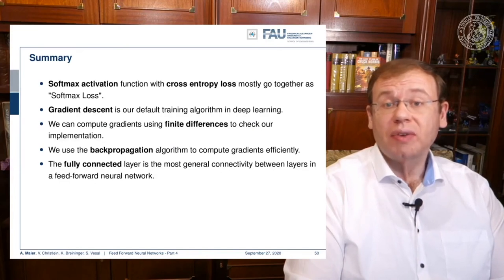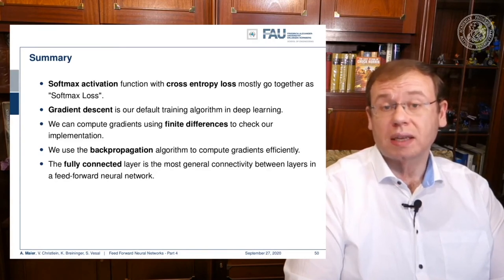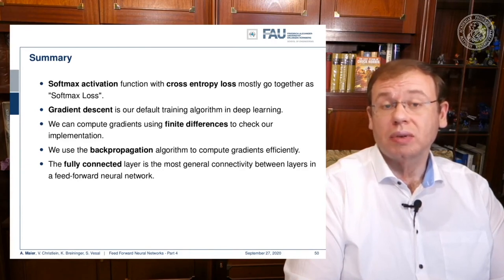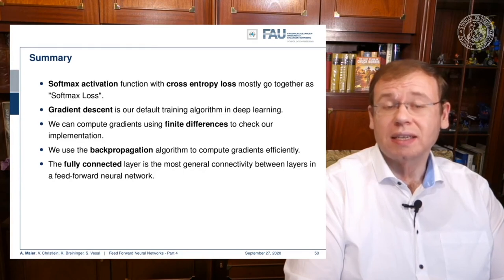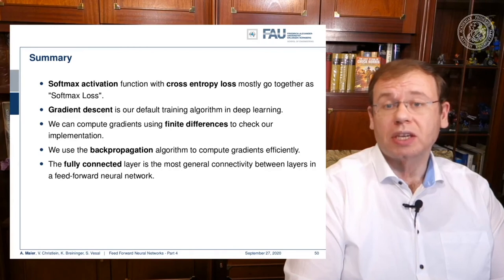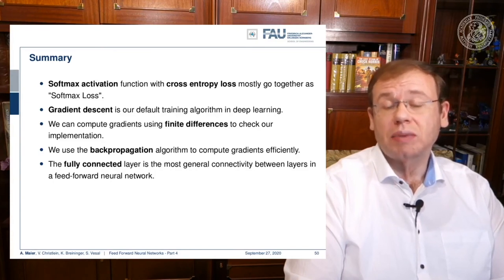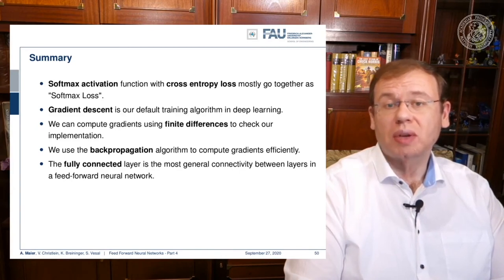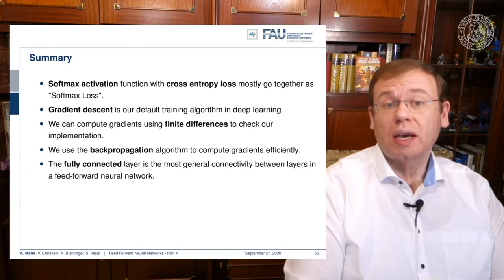To summarize: we've seen that combining softmax activation with cross-entropy loss allows us to naturally work with multi-class problems. We use gradient descent as the default training strategy, and gradients can be checked numerically using finite differences — very useful for verifying implementations. The backpropagation algorithm computes gradients efficiently. Fully connected layers can be abstracted as complete layers, so we compute layer-wise derivatives rather than going node by node. Matrix calculus turns out to be very useful here.